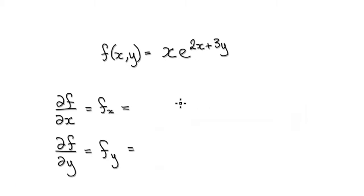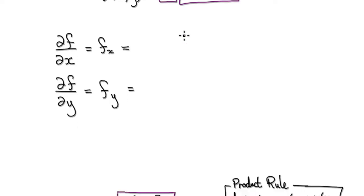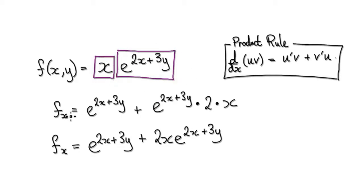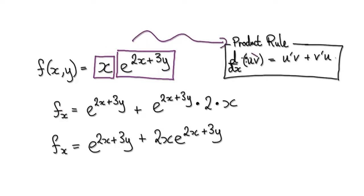So to do this, visualize this as one block multiplying another block. You're differentiating with respect to x. This block here is a variable, and this block here contains x, so it's also a variable. So you've got to use the product rule.